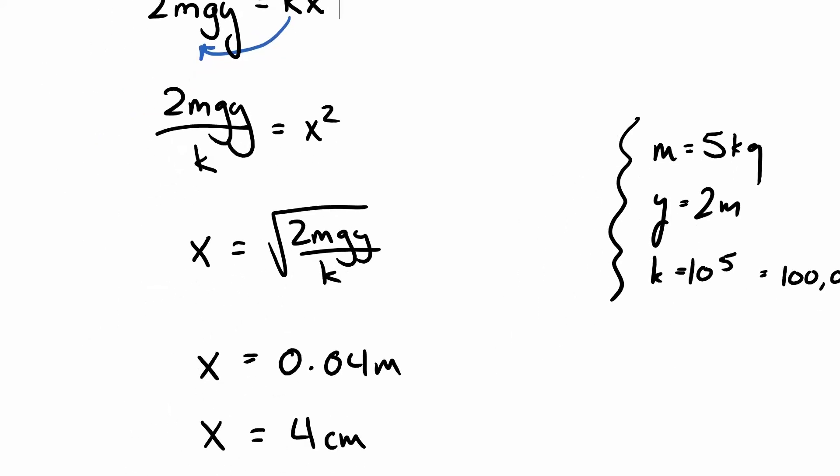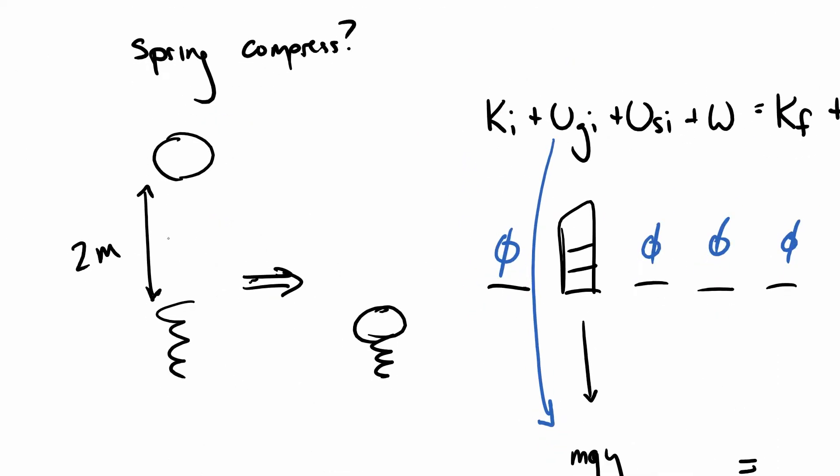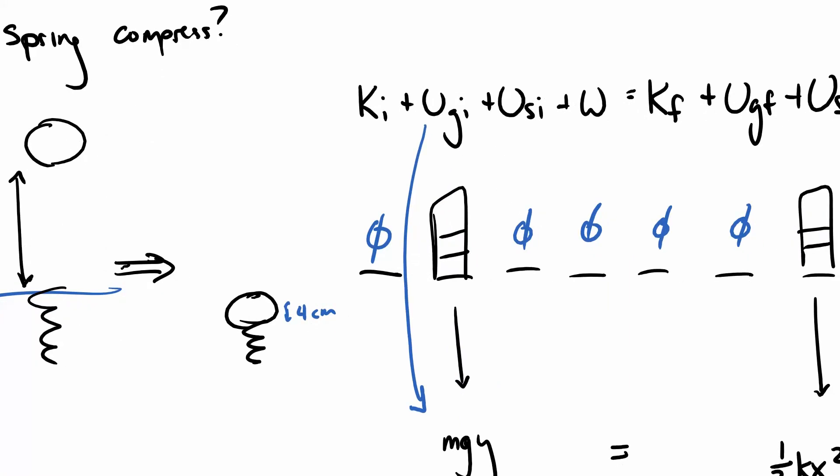Now, one thing you might be wondering, wait a second. If this was two meters above the spring, this is now four centimeters below where we said the zero was. And you're right. We really should have an itty bitty tiny bit of negative gravitational energy here. But because four centimeters is so small compared to two meters, we're just going to say that we can kind of let that one slide. It's always good to go back and check these things and justify them. The amount of energy that we're neglecting here is a small amount, but it still matters.